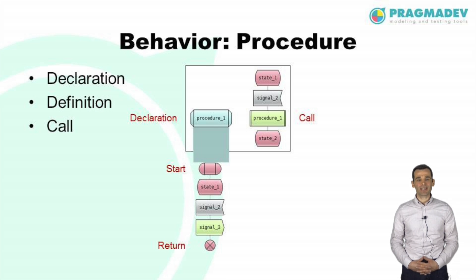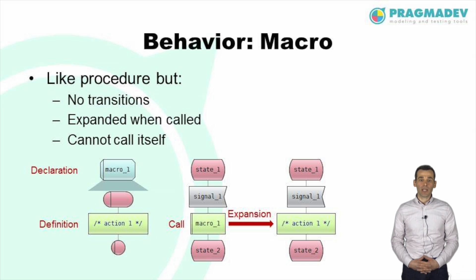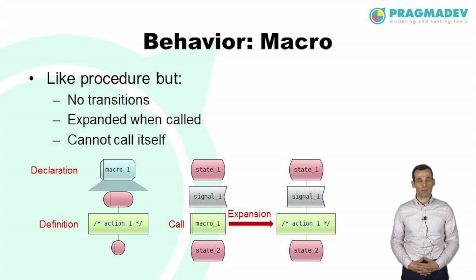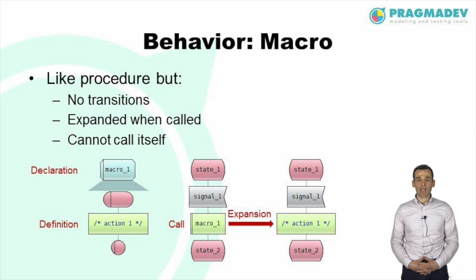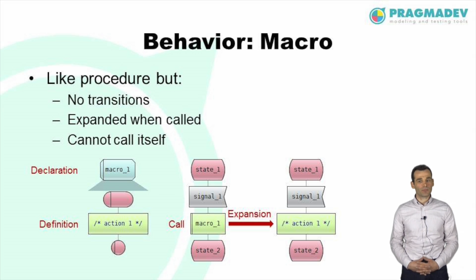Procedures can send and receive messages and modify the data of their declaring agent. Another way to factorize behavior is with macros. Unlike procedures, macros cannot receive messages and thus no transition can be defined inside them. A macro is expanded when called, which is like replacing the call symbol by the contents of the macro. This is why a macro cannot call itself, as it would cause an infinite expansion.